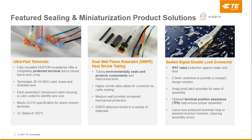Lastly, we have TE's field signal double lock connectors — a miniaturized connector system rated for IP67 level protection against water and dust, very compact with a 2.5 millimeter centerline and a snatch-proof latch design. It has loss-proof polarized terminals and an optional terminal position assurance (TPA) that further reduces assembly errors and prevents terminal back-out. These are just a small range of the terminal, splice, tubing, and sealed connector products we offer — there's a much larger variety available.